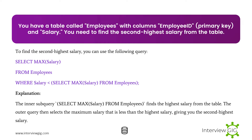You need to find the second highest salary from the table. To find the second highest salary, you can use the following query. The inner subquery selects the max salary from Employees, finding the highest salary. The outer query then selects the maximum salary that is less than the highest salary, giving you the second highest salary.